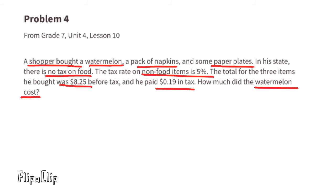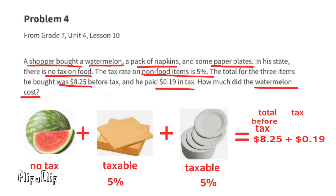Problem 4 from 7th grade Unit 4 Lesson 10: A shopper bought a watermelon, a pack of napkins, and some paper plates. In his state there is no tax on food; the tax rate on non-food items is five percent. The total for the three items was $8.25 before tax, and he paid 19 cents in tax. The 19 cents represents the five percent total tax on the napkins and paper plates.